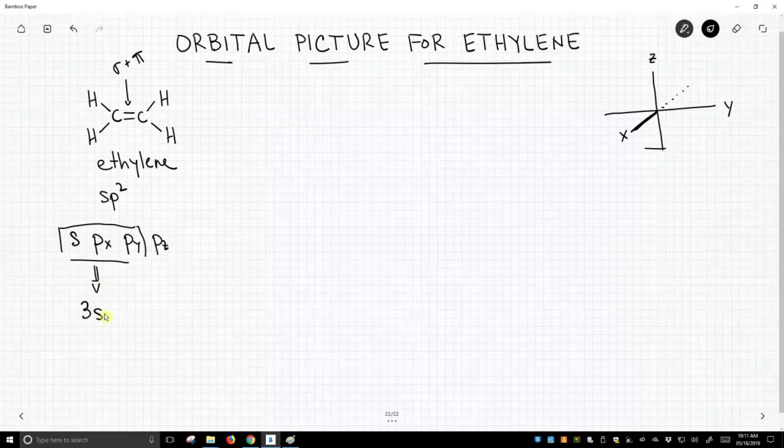So we get three sp2 hybrids, and these are going to sit in the xy plane because we use the px and py, and we'll have a leftover pz orbital.